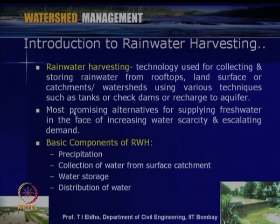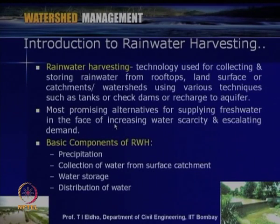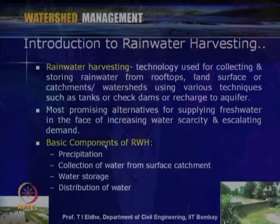Rainwater harvesting is the most promising alternative for supplying fresh water in the face of increasing water scarcity and escalating demands. With growing population, industrialization, and expanding agriculture requiring more water, and over 60 percent of India dependent on rain-fed agriculture, rainwater harvesting is crucial. Now let us look at the basic components of rainwater harvesting.